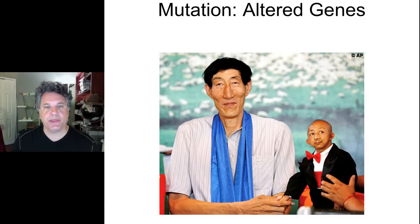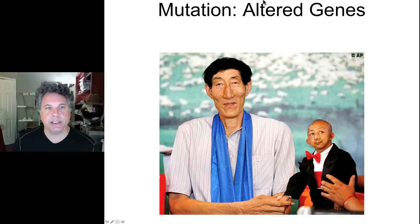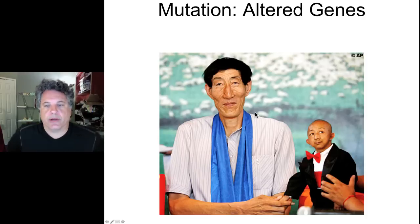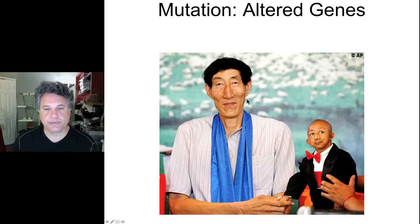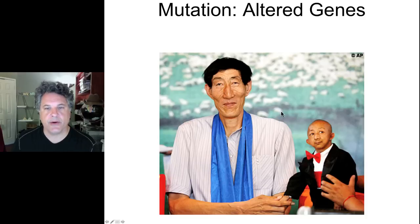Mutations do not only produce pathologies, but are also responsible for the huge amount of genetic variation we find in human populations. Mutation coupled with recombination and independent assortment of chromosomes generates the huge amount of genetic variation found in nature. These two individuals — the largest man on record and one of the smallest — both from Inner Mongolia, illustrate the genetic variation generated by differences in alleles, which are ultimately derived from mutations or changes in DNA.